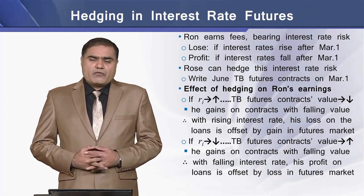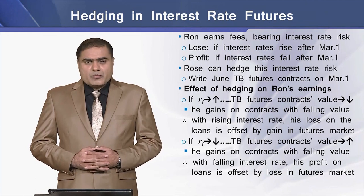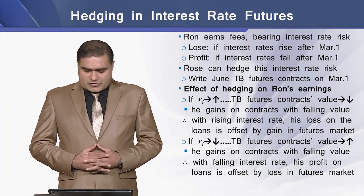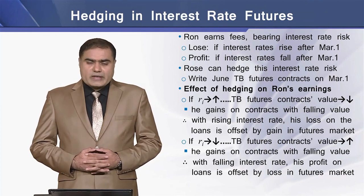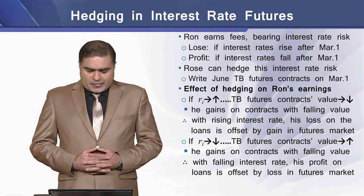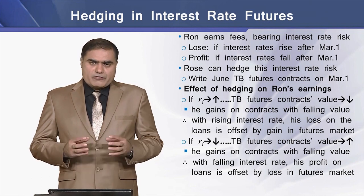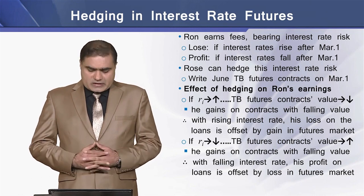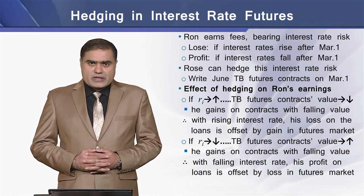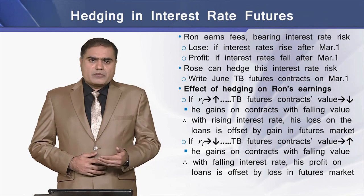In the second situation, if the interest rate falls down, then Treasury Bond futures contract value will go high. This means that Ron's gain on the contract with falling value reverses — with falling interest rates, his profit on the loans is offset by the loss in the futures market.